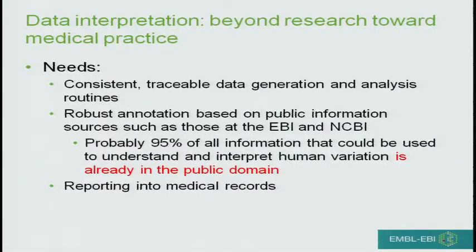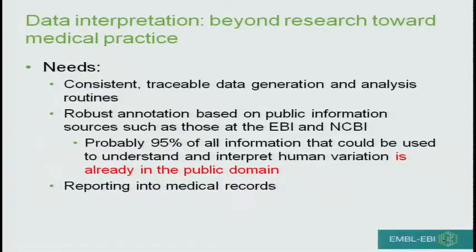To put this into finer point: to go from research understanding of human variation to using it in more standard medical practice, I think we need a few things, from my perspective sitting on top of a number of very large databases. We need consistent, traceable data generation and analysis routines — we simply have to know what we have done. Robust annotation based on public information sources such as those at the EBI or the NCBI. About 95% of all the information that could be used to understand and interpret human variation is already in the public domain. And we need to report some of this information into medical records so that it can be used.